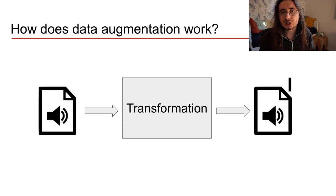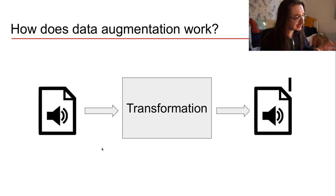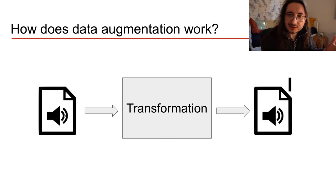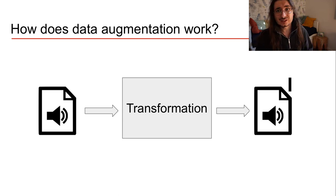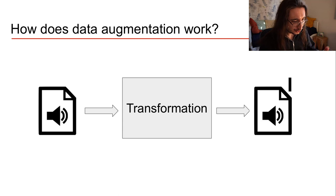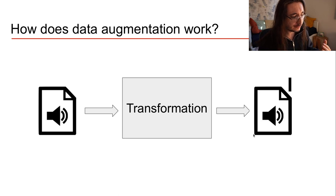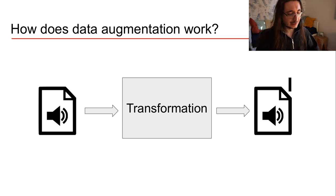So how does data augmentation work? It's basically a transformation pipeline. You start with your piece of audio — it could be any type of data really, but of course we are dealing with audio here. You pass it to some sort of transformer. In the case of images it could be cropping or rotation; in the case of audio it could be adding reverb or pitch shifting. We'll see all these techniques later in the series. You get out a new, derived version of the original audio file — that is your augmented data.